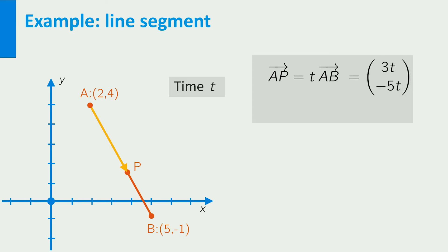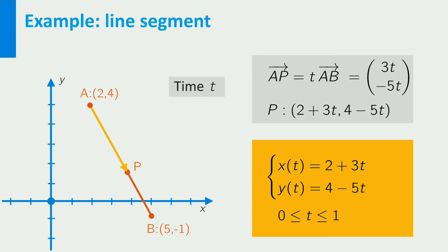Note that we can take the t into the vector. We now know vector AP and the coordinates of A, so we can find that P has coordinates (2 + 3t, 4 - 5t). This gives precisely the coordinate functions x(t) = 2 + 3t and y(t) = 4 - 5t.